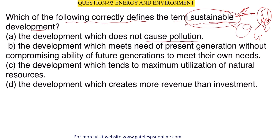The definition of sustainable development is: development which meets the needs of the present generation without compromising the ability of future generations to meet their own needs. This means we use resources now while also planning for future generations. Option B is the correct answer.